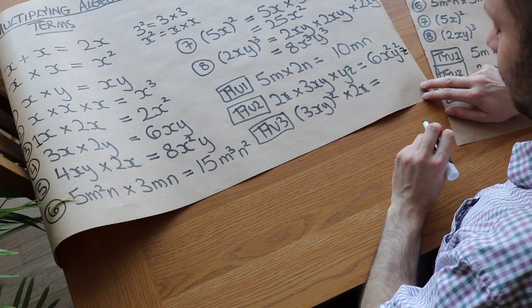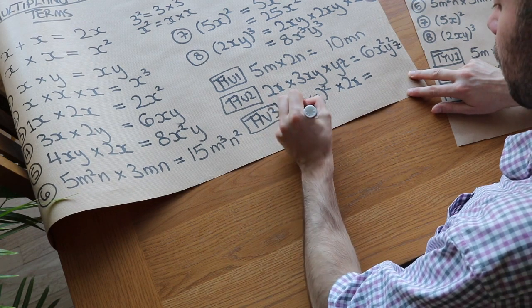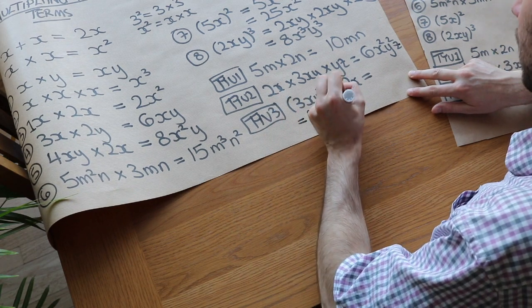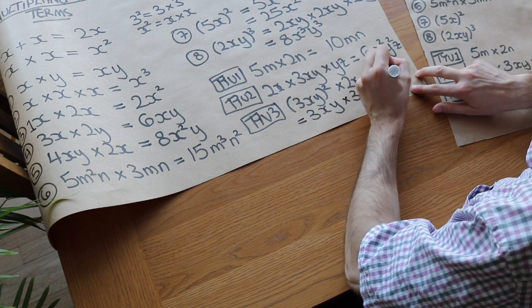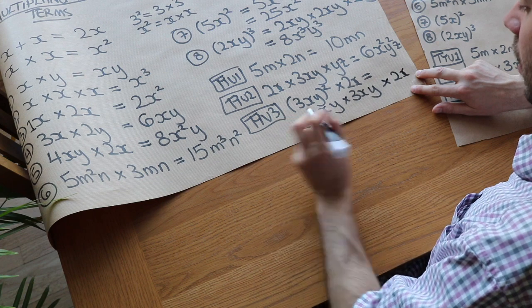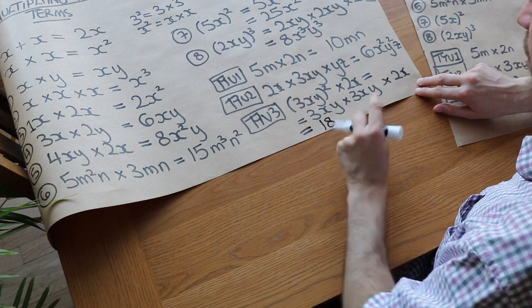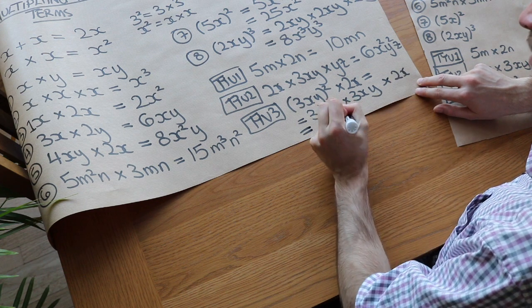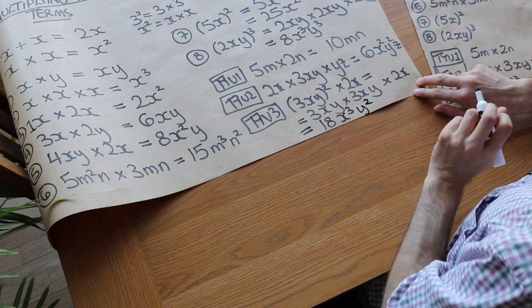And then the final one, what I'm going to do first is I'm going to write that as 3xy times 3xy. Because anything squared means that thing times by itself. And then we've got times the 2x. So we've got 3 times 3 times 2, which is 18. We've got x times x times x, which is x cubed. And then we've got y times y, which is y squared.